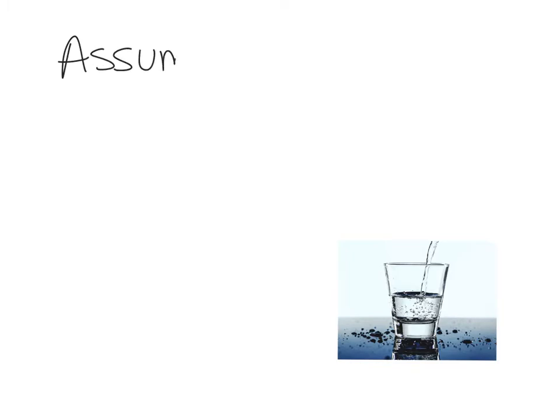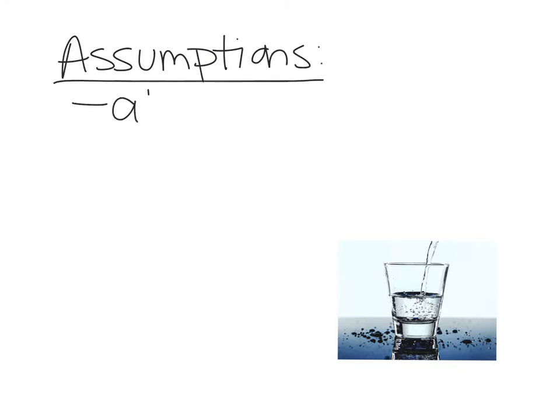In order to calculate the water activity level of a food we have to state a few assumptions. First, everything other than what's listed on the nutrition label is water — this makes it easiest to calculate based on total ingredients. Second, we have to approximate molecular weights. Since not all sugars are the same, we use a general assumption and an average estimate of the molecular weight of sugar.